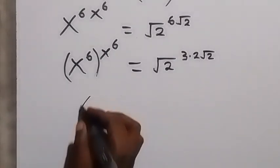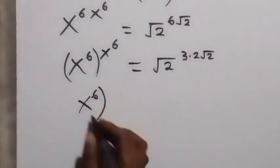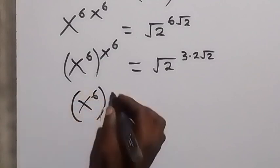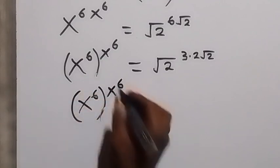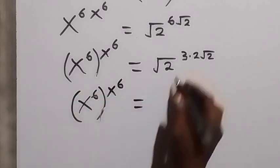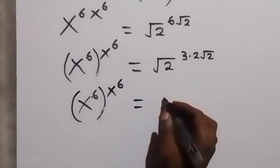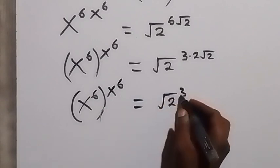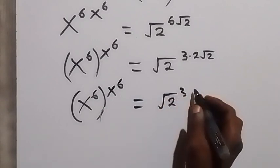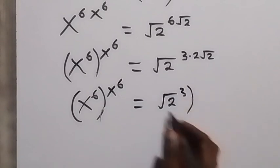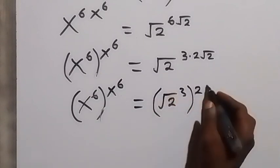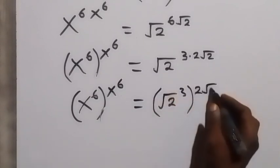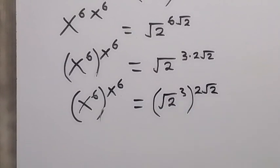So we have x raised to power 6, raised to power x raised to power 6, equals root 2 raised to power 3, then raised to power 2 root 2.